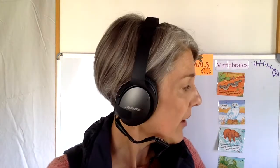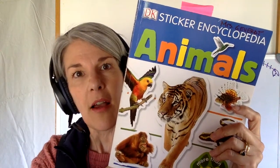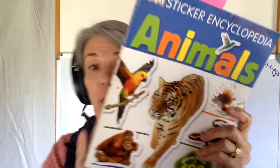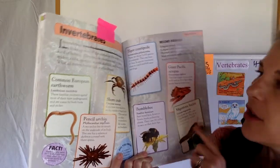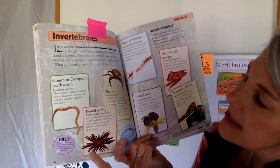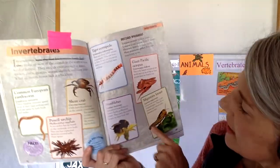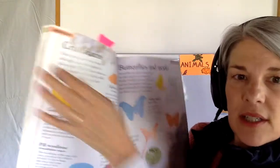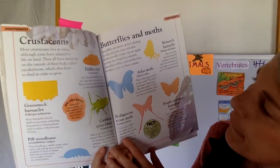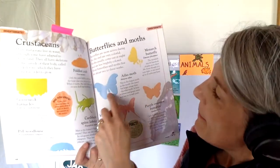If you wanted to learn more about invertebrates, you brought home a book from school called the Sticker Encyclopedia of Animals - it's really cool. One of the pages in that book is about invertebrates. It shows you pictures of sea creatures that are squishy and crunchy, and land animals as well. You can turn the page and find animals - these are all invertebrates, they have no bones.